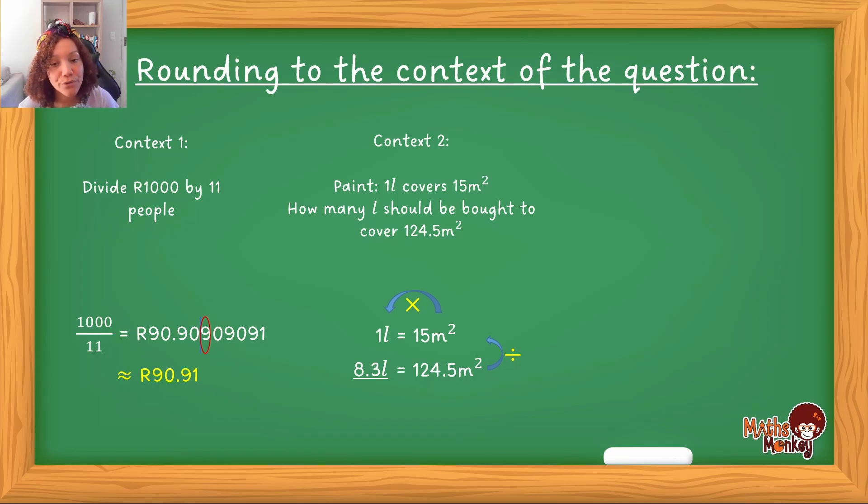However, I can't go to the shop and buy 8.3 liters. They only sell the liters in whole numbers. Do you agree with me that if I only buy 8, if I rounded this off using the methods in the previous slide and with money, I would round this off to 8 liters. However, in this context, 8 liters is not going to be enough because we need 8.3 liters. So if I'm going to go to the shop, I need to buy 9 liters. That's how I take the context into consideration when I'm rounding off.